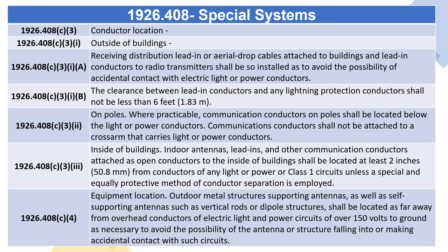1926.408(C)(3)(iii) — Inside of Buildings. Indoor antennas, lead-ins, and other communication conductors attached as open conductors to the inside of buildings shall be located at least 2 inches (50.8 millimeters) from conductors of any light or power or Class 1 circuits, unless a special and equally protective method of conductor separation is employed. 1926.408(C)(4) — Equipment Location. Outdoor metal structures supporting antennas, as well as self-supporting antennas such as vertical rods or dipole structures, shall be located as far away from overhead conductors of electric light and power circuits of over 150 volts to ground as necessary to avoid the possibility of the antenna or structure falling into or making accidental contact with such circuits.